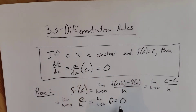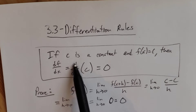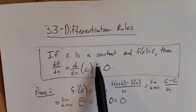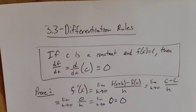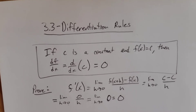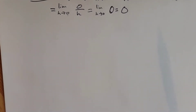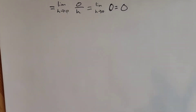So what we can do now is instead of doing this limit every time, if we ever have the derivative of a constant function, we know instantly that that is zero. We don't have to work out this limit each time now.